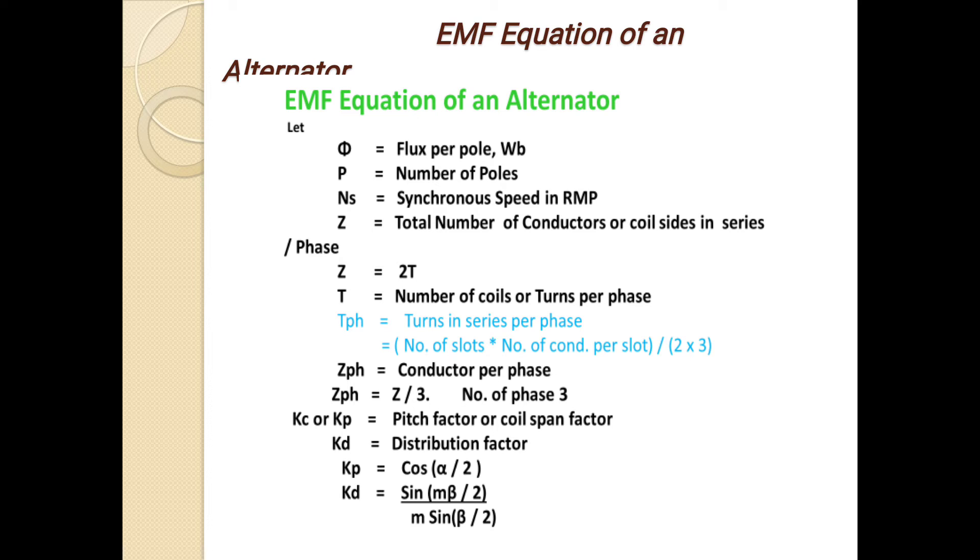Conductor per slot is 3 means 2 into 3. Z phase is equal to conductor per phase. Z phase equals Z divided by 3 because the number of phases is 3.